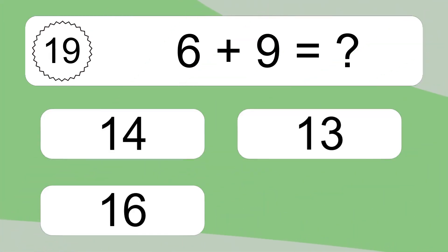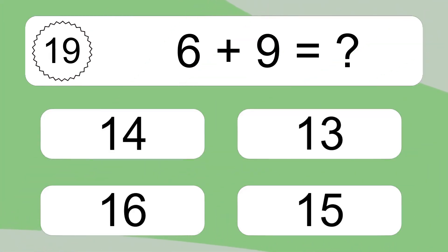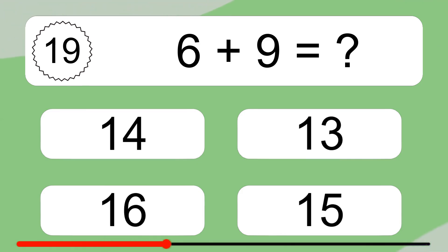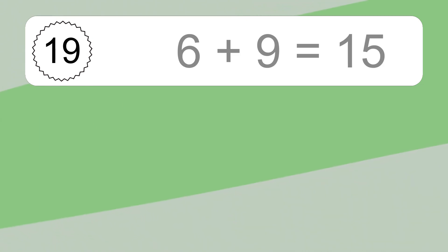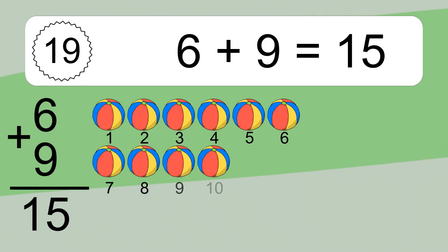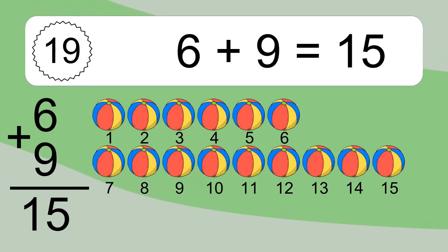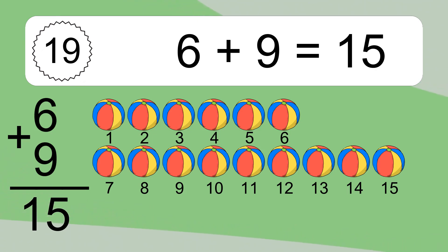6 plus 9 equals what? 6 plus 9 equals 15. Let's count it. 1, 2, 3, 4, 5, 6, 7, 8, 9, 10, 11, 12, 13, 14, 15.